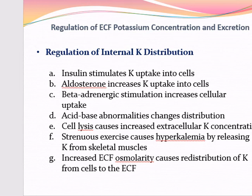The fourth factor is acid-base abnormalities, which change the distribution of potassium. Metabolic acidosis increases the extracellular potassium concentration, whereas metabolic alkalosis decreases the extracellular potassium concentration. Although the mechanisms are not completely understood, one effect of increased hydrogen ion concentration is to reduce the activity of the sodium-potassium ATPase pump. This reduction decreases cellular uptake of potassium and raises the extracellular potassium concentration.